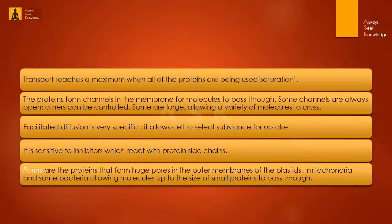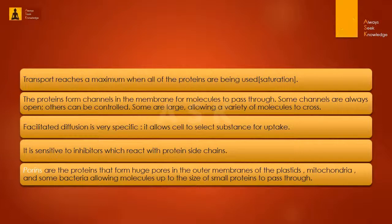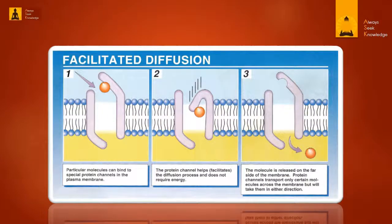In facilitated diffusion, transport reaches a maximum when all of the proteins are being used - saturation. The proteins form channels in the membrane for molecules to pass through; some channels are always open, others can be controlled, and some are large, allowing a variety of molecules to cross. Facilitated diffusion is very specific, allowing cells to select substances for uptake, and is sensitive to inhibitors which react with protein side chains. Porins are proteins that form huge pores in the outer membranes of plastids, mitochondria, and some bacteria, allowing molecules up to the size of small proteins to pass through.